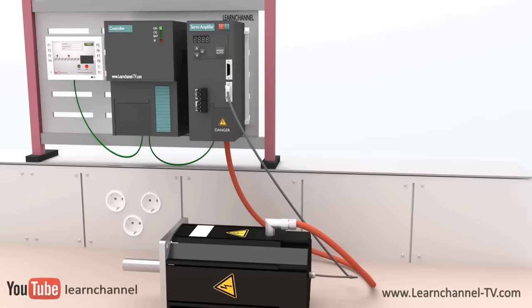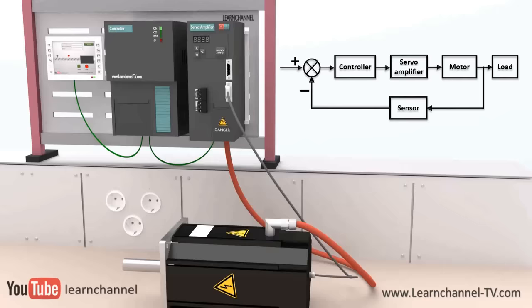The job of the servo motor controller, also named as the motion controller, is to close the loop on the system by constantly interchanging data with the servo amplifier. The motor parameters like torque, speed, or position can be adjusted immediately.